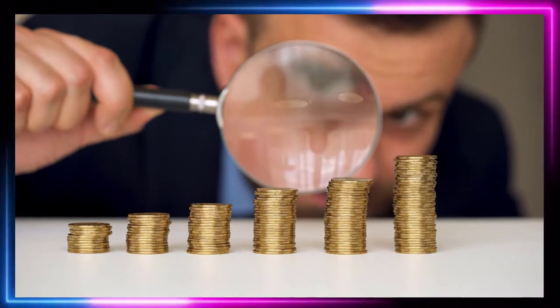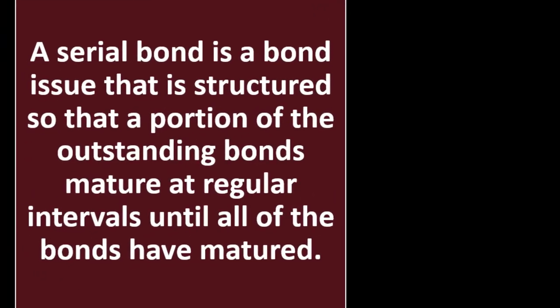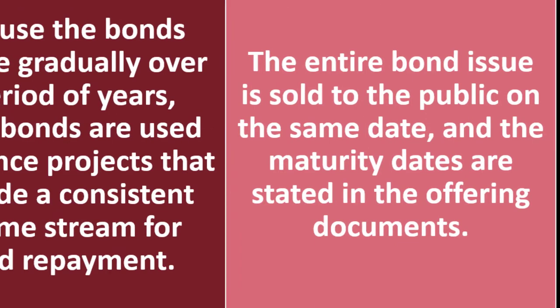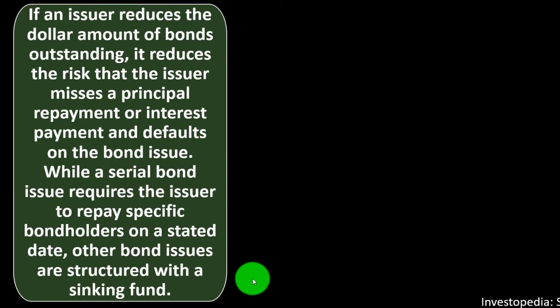Keeping those in mind, we're now asking: what is a serial bond? A serial bond is a bond issued that is structured so that a portion of the outstanding bonds mature at regular intervals until all the bonds have matured. Because the bonds mature gradually over a period of years, these bonds are used to finance projects that provide a consistent income stream for bond repayment. The entire bond issue is sold to the public on the same date and the maturity dates are stated in the offering documents.